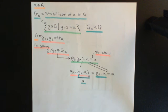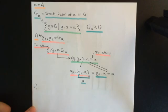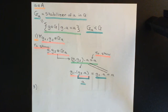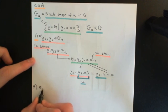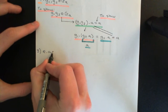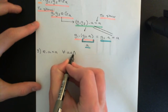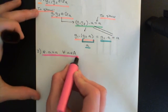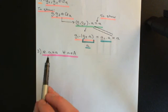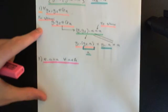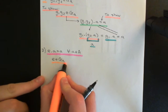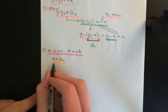Axiom number one is obeyed. We don't need to bother with axiom number two of group theory. For axiom number three, we need to check that the identity element from group capital G is in our stabilizer of a in G. By axiom number two of group actions, the identity element dot a equals little a no matter what little a you pick from the set capital A. The identity fixes absolutely all elements — it is associated with the identity permutation of the set capital A. So the identity is always an element of the stabilizer of a in G.